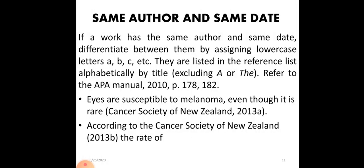Same authors and same date: sometimes the author is the same and the date is the same. According to APA style, we add a lowercase 'a' or lowercase 'b' after the year. For example, 'Cancer Society of New Zealand 2013a' — and if the same reference comes again for the second time it becomes '2013b'. You are supposed to follow these rules strictly in your research work and literature review.